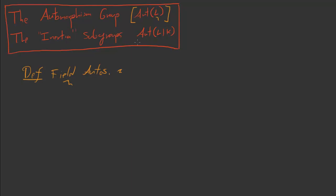We know what a field automorphism is. We fix some field L and look at all its automorphisms, putting them into one object called Aut(L). As I mentioned, Aut(L) is actually going to be a group in the algebraic sense. This is important because it will allow us to mix field theory and group theory: group-theoretic facts about Aut(L) will reflect field-theoretic facts about L, and vice versa.